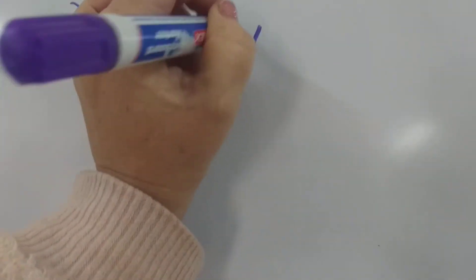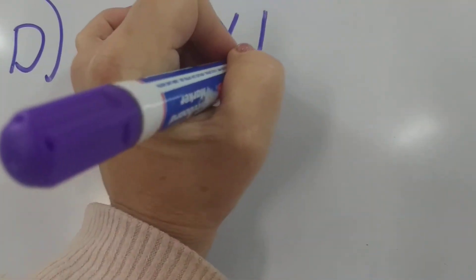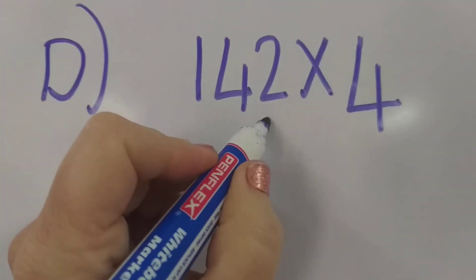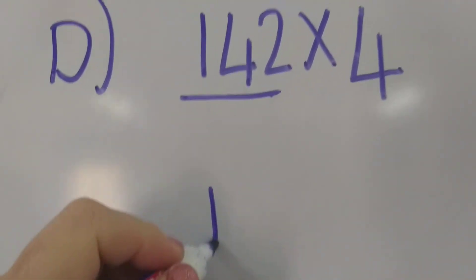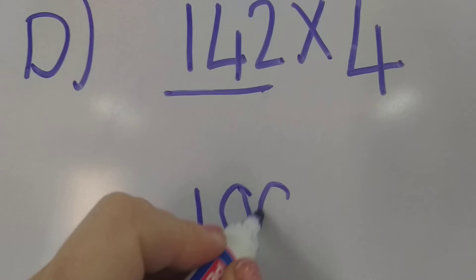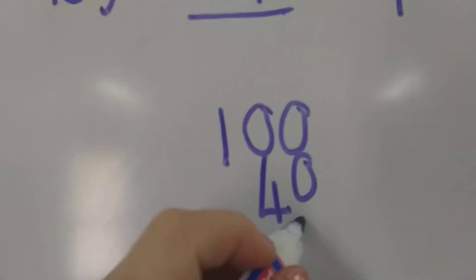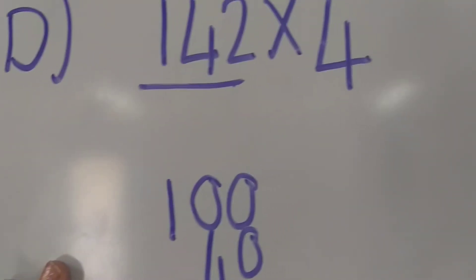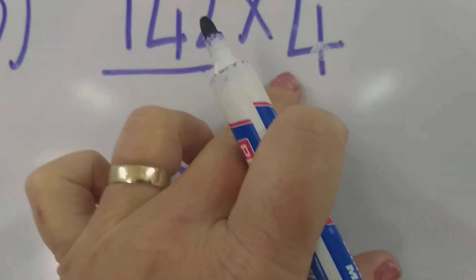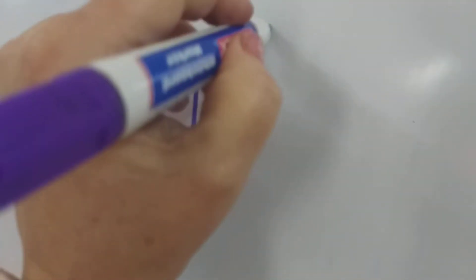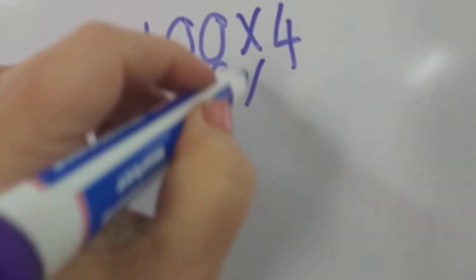D is 142 times 4. So this is the bigger number that we're going to break down. Just go 140 and 2. Now we've broken the number. Now what do we do? We times it by whatever we times it by. In this case, it's 4. So just times each one by 4.